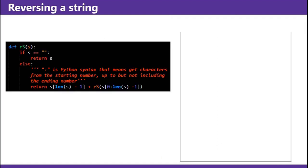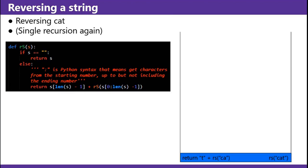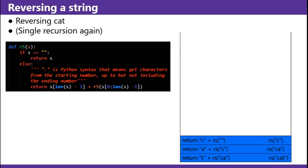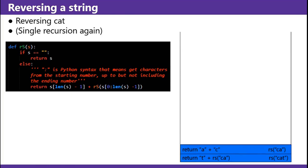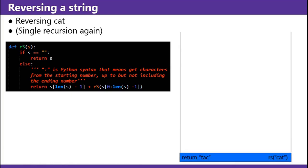Reversing a string — reversing 'cat'. Single recursion again. You do T plus reverse('ca'), A plus reverse string of 'C', C plus reverse string of empty string. Reverse string of empty string: you return the empty string back. You return C. A plus C. You return A plus C to T, and you end up returning TAC — because that's 'cat' backward.